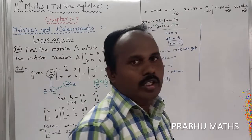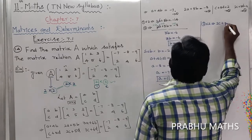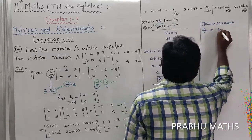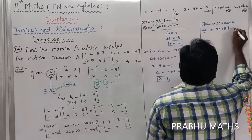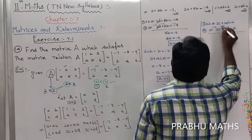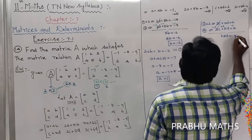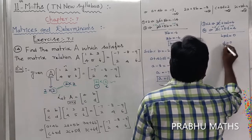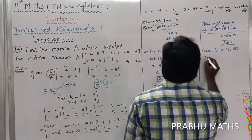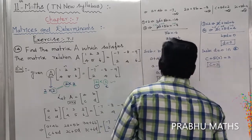For equations 3 and 4: multiply equation 3 by 2 to get 2C+10D = 4. Equation 4 is 2C+5D = 4. Subtracting gives 5D = 0, so D = 0. Substituting D = 0 into equation 3: C + 5(0) = 2, so C = 2.